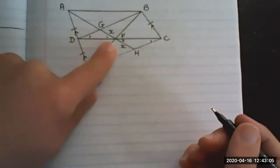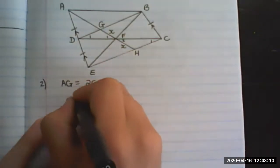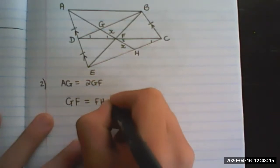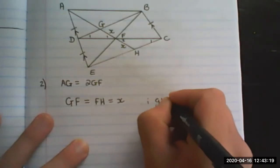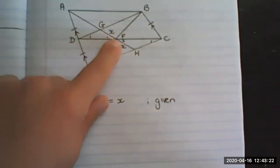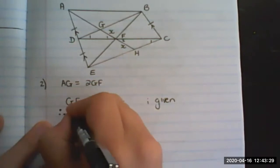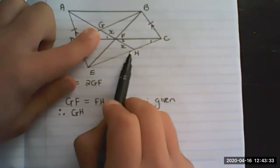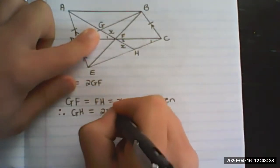What we have in terms of GF is GF equals FH which equals x, that was given to us. Therefore, the whole line GH is equal to 2x.